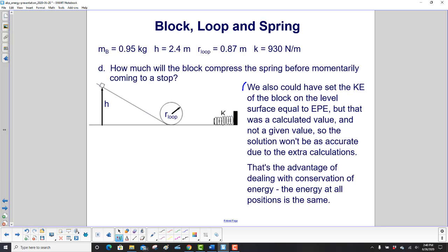And here I have printed out what I said on the previous slide. We could have set the KE of the block on the level surface equal to the EPE of the spring, but that was a calculated value, not a given value, so the solution won't be as accurate due to the extra calculations, and there's more room for a mistake.